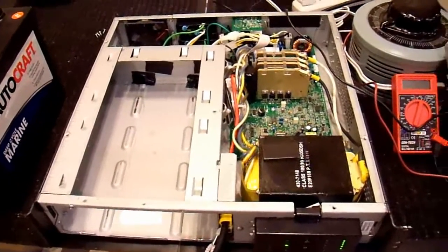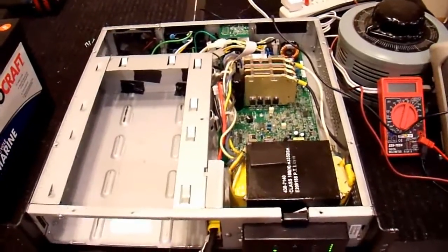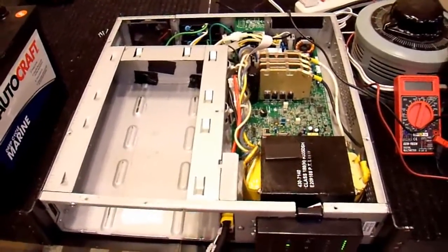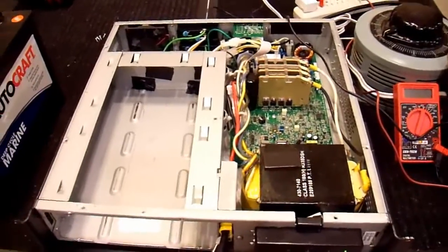So if the wall power is at 170 volts and this UPS happens to be 180 degrees out of phase, for example, that means that when the relay inside this unit switches over,